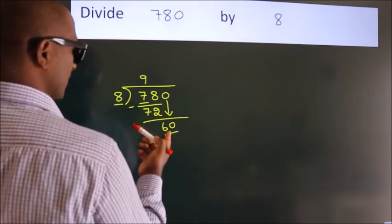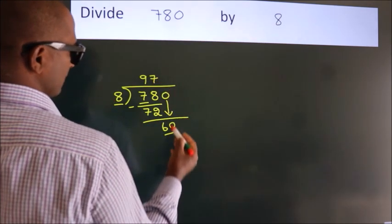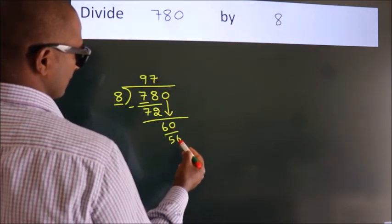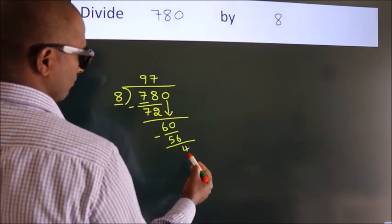A number close to 60 in 8 table is 8 sevens 56. Now, we subtract. We get 4.